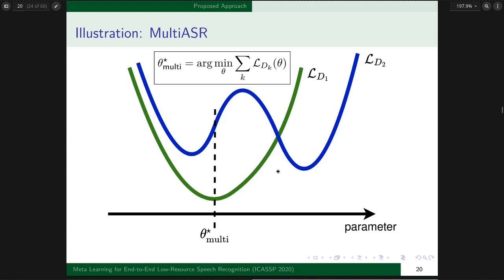In contrast, multi-ASR just evaluates theta's performance on all loss curves. It's equivalent to finding the minimum of the superposition of loss curves, without considering its further potential.